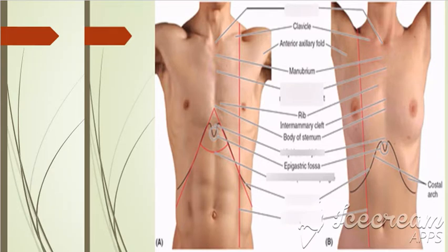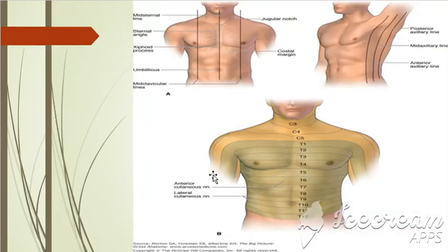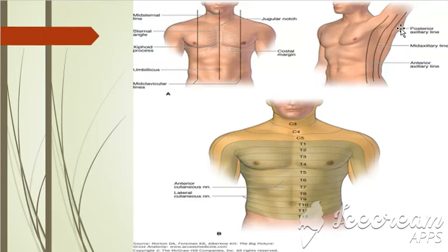Then comes the mid-axillary line. As seen in this diagram, the mid-axillary line passes vertically between the two folds of the axilla — the anterior axillary fold and the posterior axillary fold. The mid-axillary line is present between these anterior and posterior axillary lines.